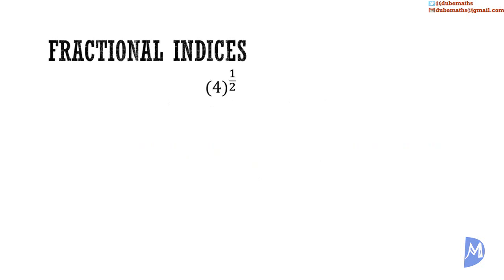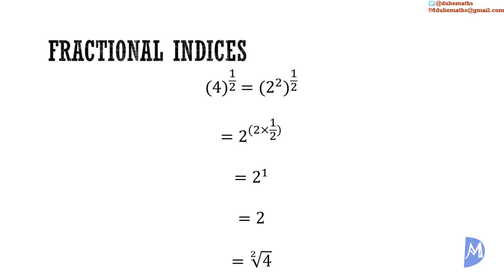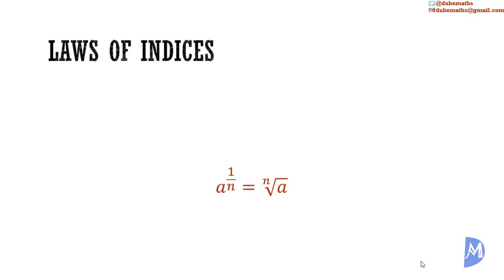Fractional indices. Consider 4 to the power of a half. We know that 2 squared is equal to 4, so substituting, 4 to the half power is the same as 2 squared to the half power. From the power rule, 2 squared to the half power equals 2 to the power of 2 multiplied by half, which equals 2 to the 1st power, which is 2. And we know that 2 is the square root of 4, so 4 to the half power is the same as the square root of 4. In general, a to the 1 over n power is the nth root of a.